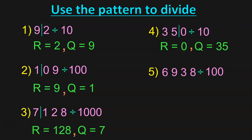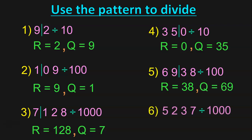Next, 6,938 divided by 100: I should draw the line after the 10's place, so the remainder will be 38 and the quotient is 69. Then the last number is 5,237 divided by 1,000: draw a line after the 100's place, so the remainder is 237 and the quotient is 5. Hope you have understood the concept so far.